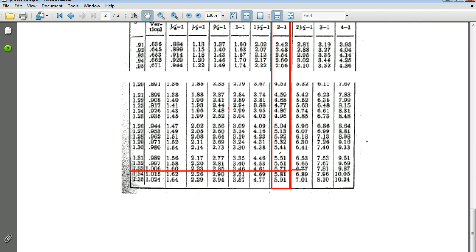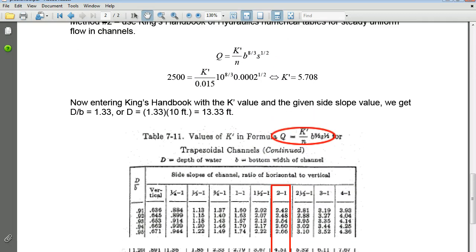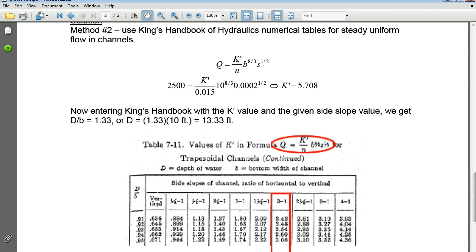The 5.7 that I calculated, I enter into this table in the column of 2 to 1 side slopes, and then I move over a line, this red one here, I move that over until it tells me what the D over B ratio is, which in this case is going to be 1.33. Then I go back with that D over B ratio back up here, and I say, fine, D over B is 1.33, or the depth is 1.33 times the bottom width B, which is 10, is given. So my depth is 13.33.